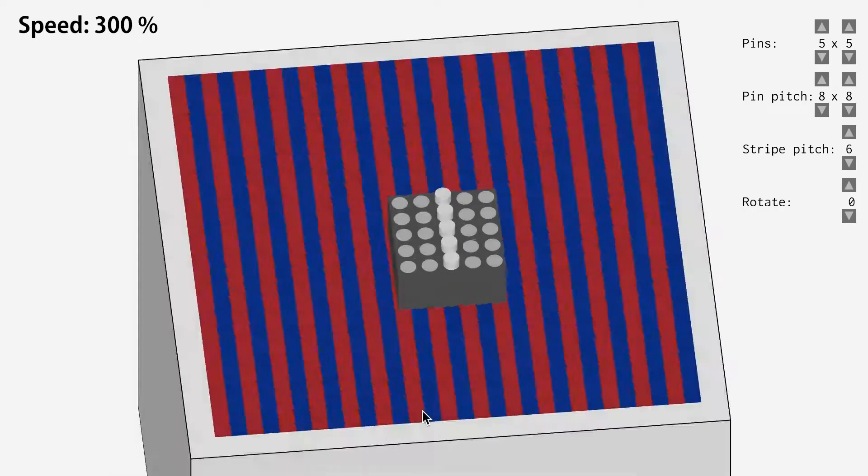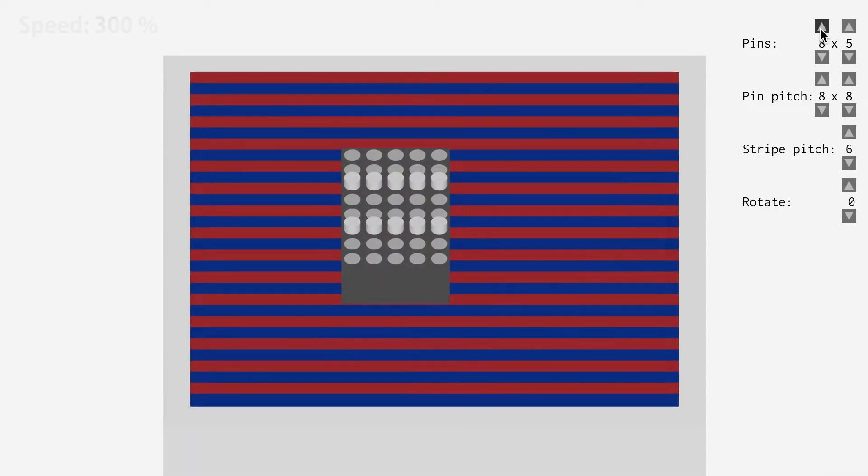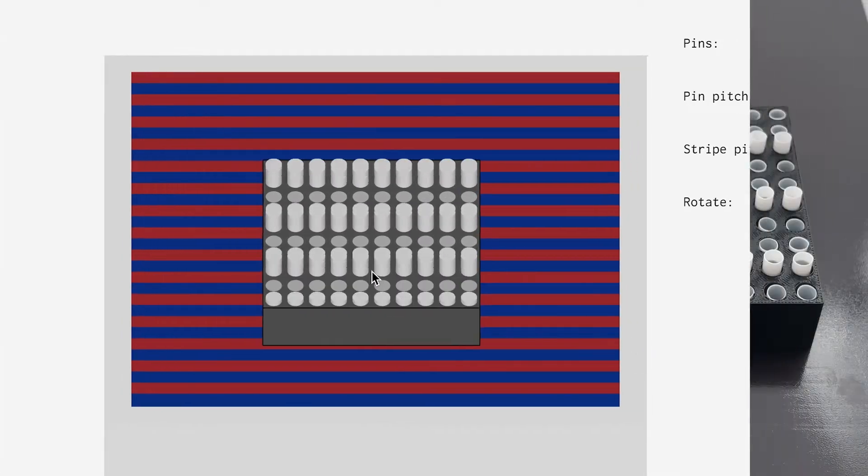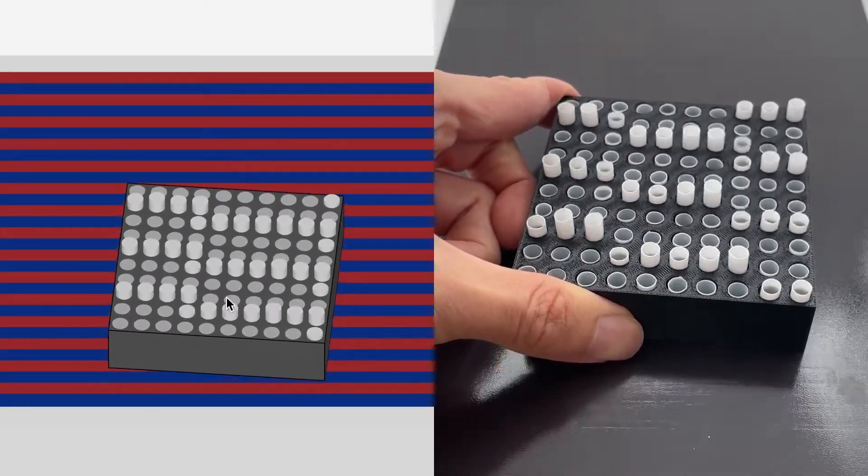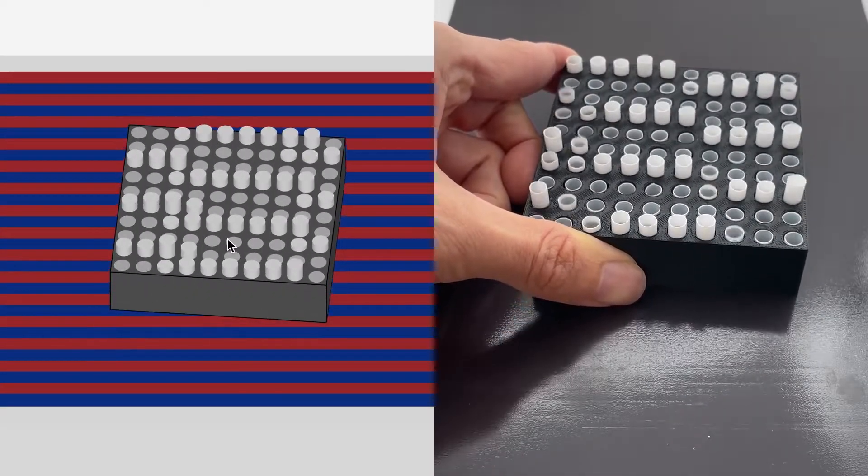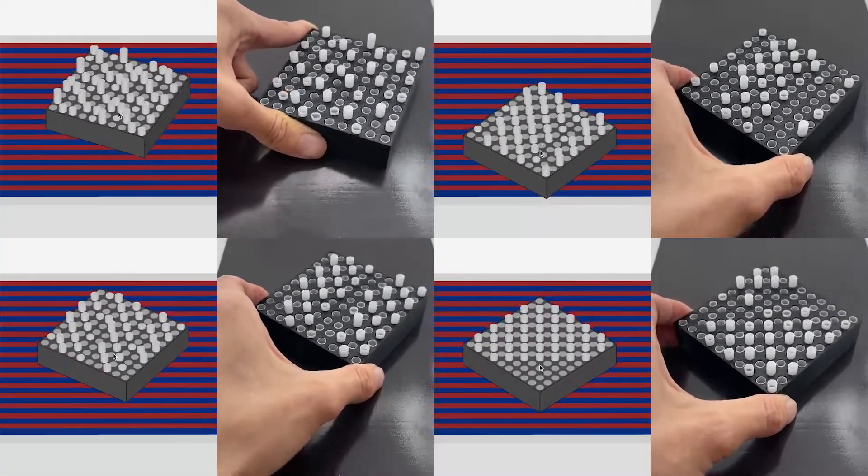Based on the measured values, we have implemented a pin motion simulator. This allows the user to see how the pin's behavior changes by changing the magnetic stripe pitch, pin array size, pin pitch, and the relative angle between the array and the magnetic stripe.